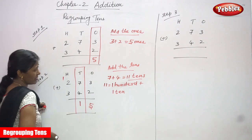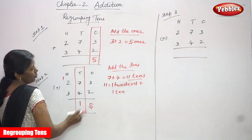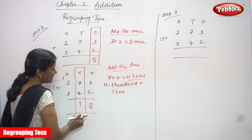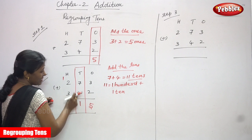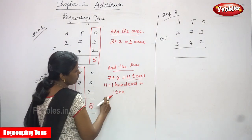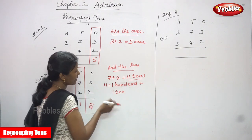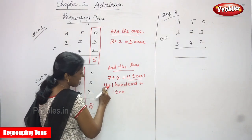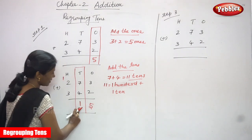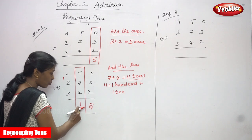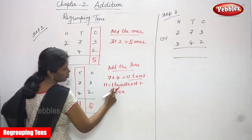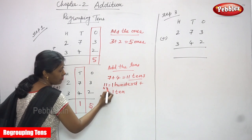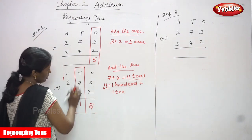To repeat: we are concentrating on the tens place — this is the regrouping method. Seven plus four equals eleven tens. Eleven tens is split into one hundred and one ten. One ten is placed in the tens place, and the remaining one hundred carries over to the hundreds place. That is what I have written: one hundred plus one ten.